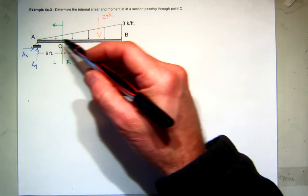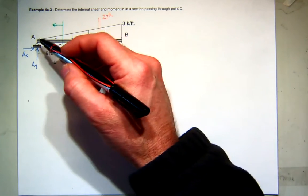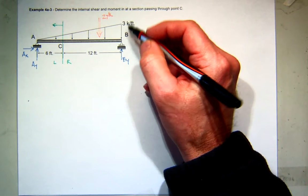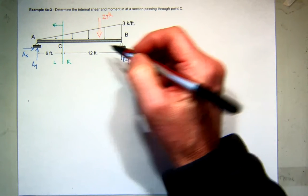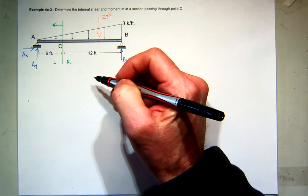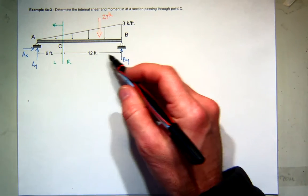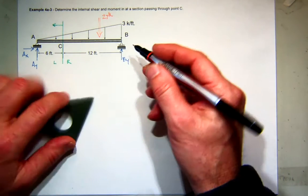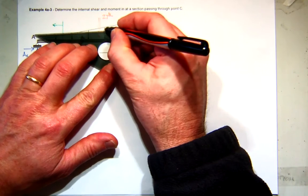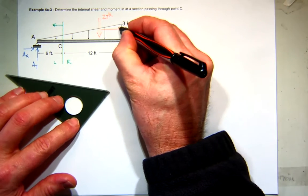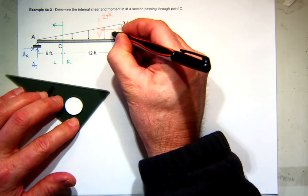So we need to know the centroid of a triangle. The way I always remember it is it's one-third the distance from the big end, or two-thirds from the small end, whichever you like. So one-third from the big end.